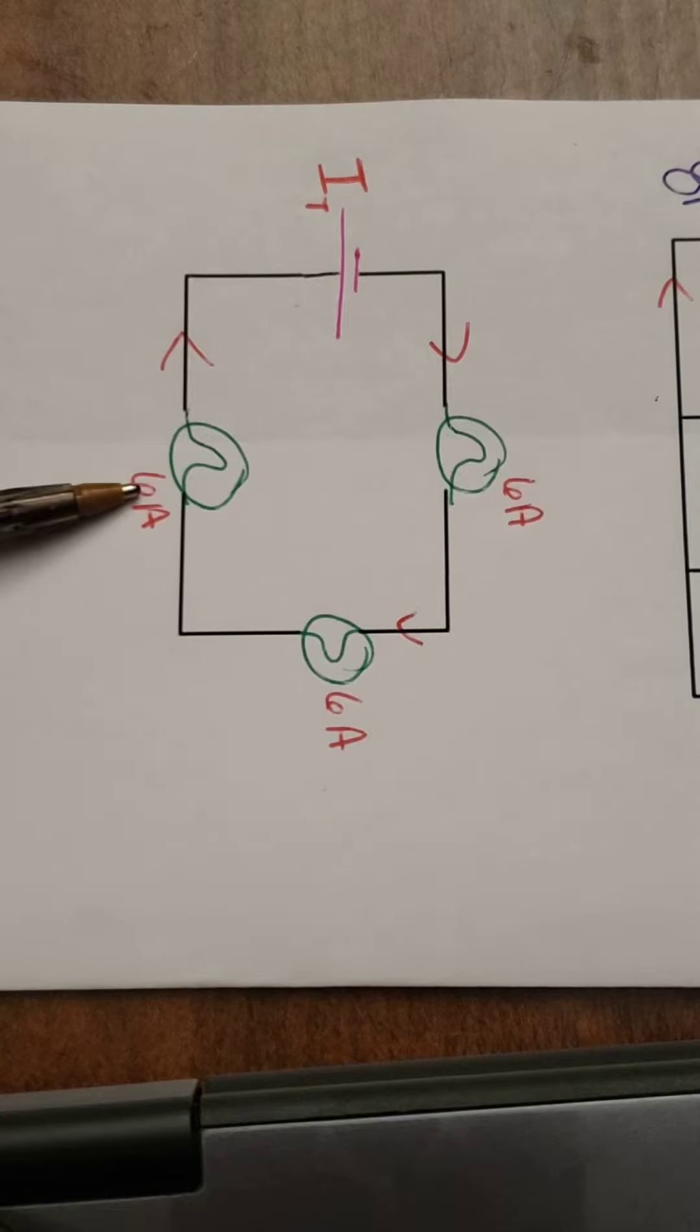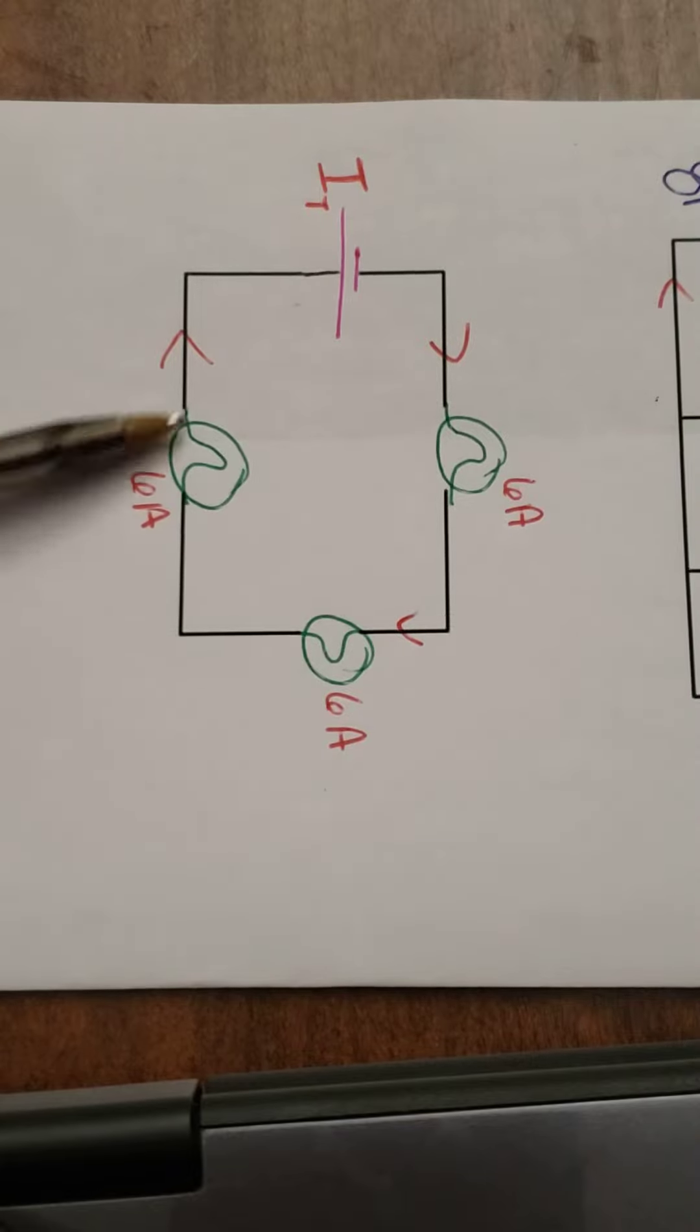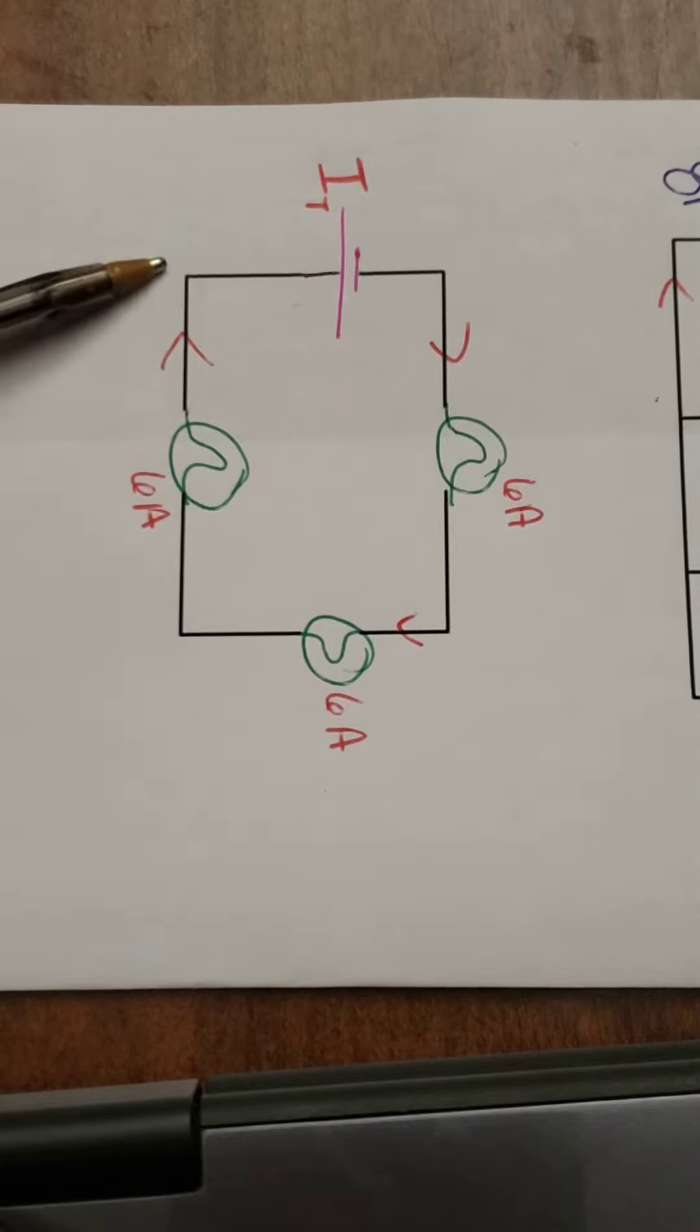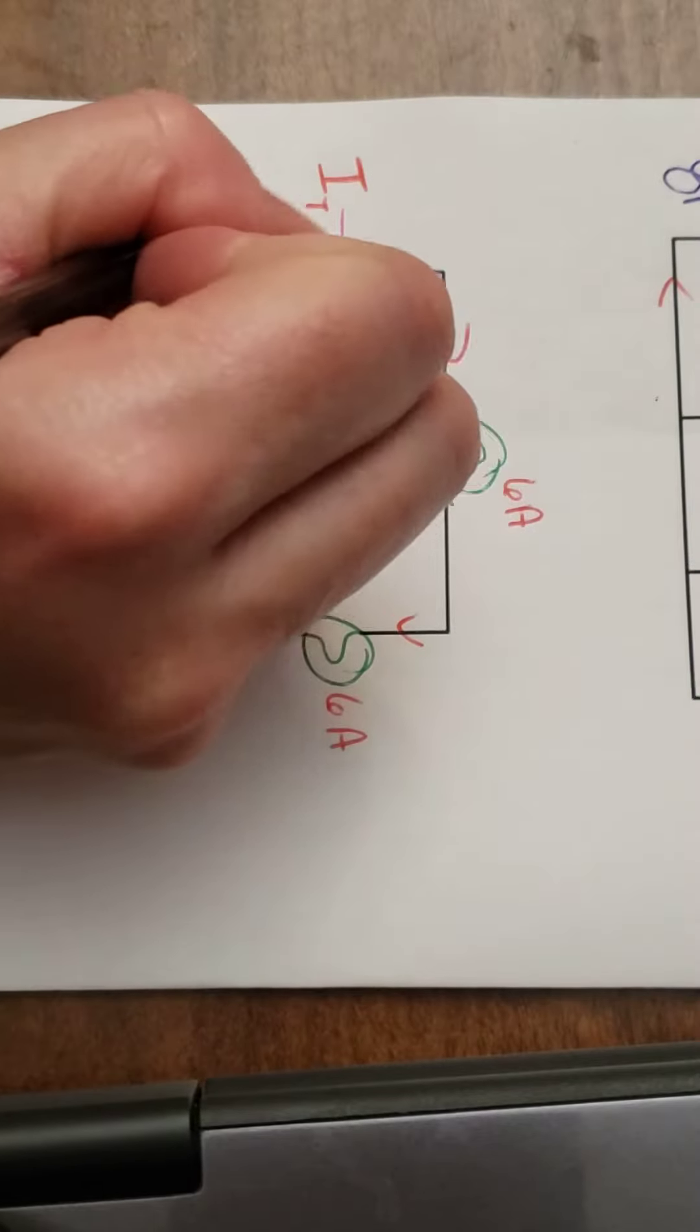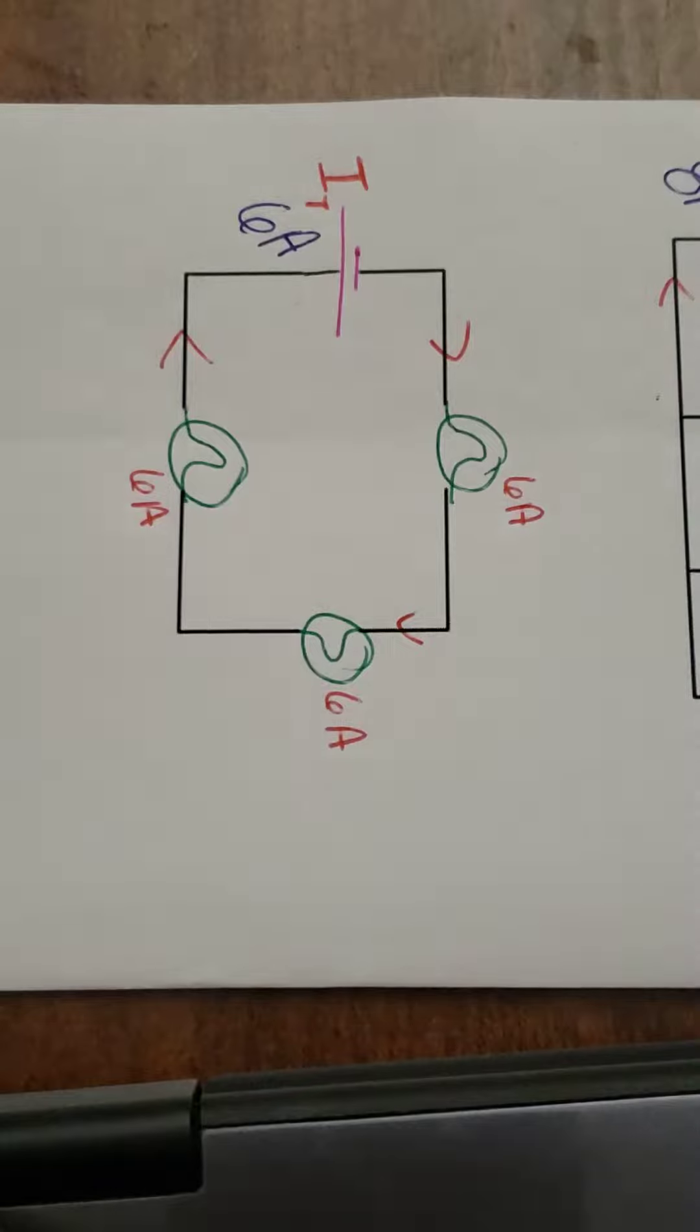Now in a series circuit, current is the same everywhere. So if I had 6, 6, 6, that means returning to the battery to get recharged up by the battery must be 6 amps.